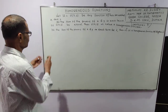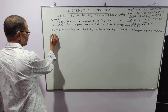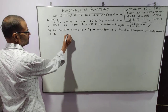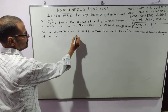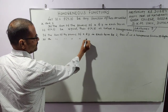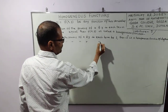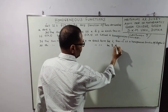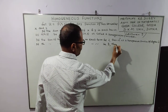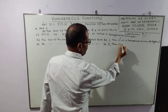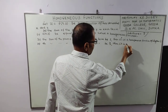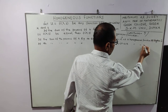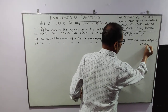If the sum of the powers of x and y in each term be 3, then it is a homogeneous function of degree 3.